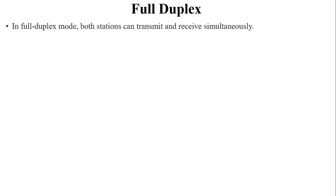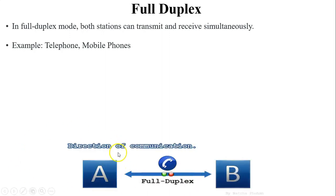Next, full duplex mode. In full duplex mode, both stations can transmit and receive at the same time. For example, two PCs in the network where both can send and receive data simultaneously — both are sender and receiver at the same time. Another example of full duplex mode is telephone networks and mobile phones, where we can talk and listen at the same time.